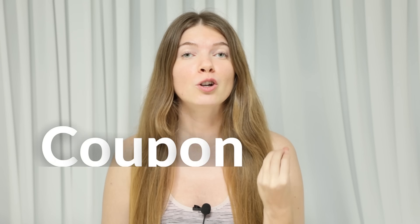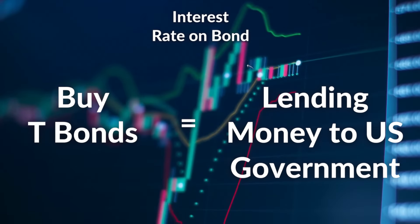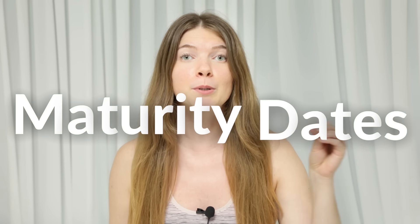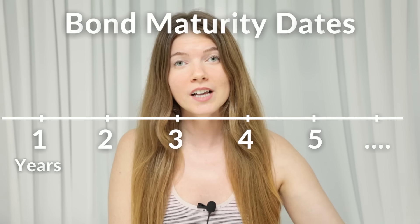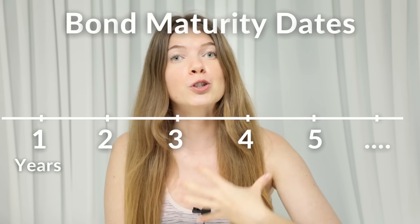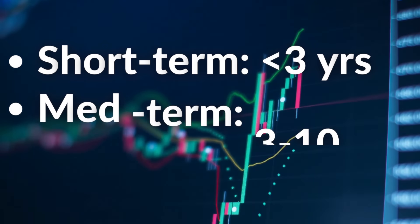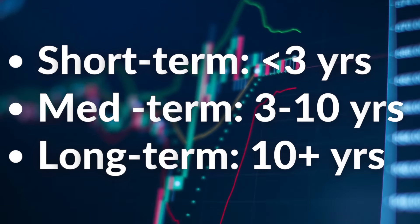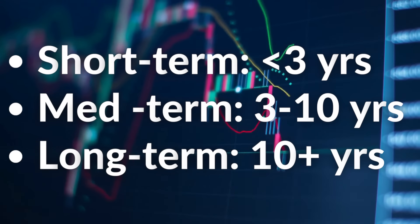These bonds have what's called a coupon rate, which is essentially the amount of interest income you will receive in return for lending the money. The most important thing to remember is that these bonds have different maturity dates — referring to the date when the borrower, in this case the U.S. government, has to repay the full value of the bond, also referred to as the face value. Maturity dates are categorized as short term (less than three years), medium term (three to ten years), and long term (ten plus years).